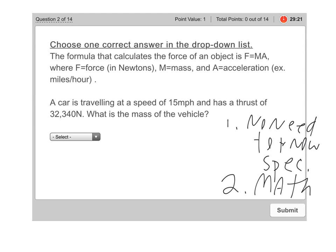So the question says choose one correct answer in the drop down list. And we'll see that in a minute. The drop down list is right here. But let's do the question first. So the formula that calculates the force of an object is F=MA, where F is force in Newtons, M is mass, and A is acceleration.